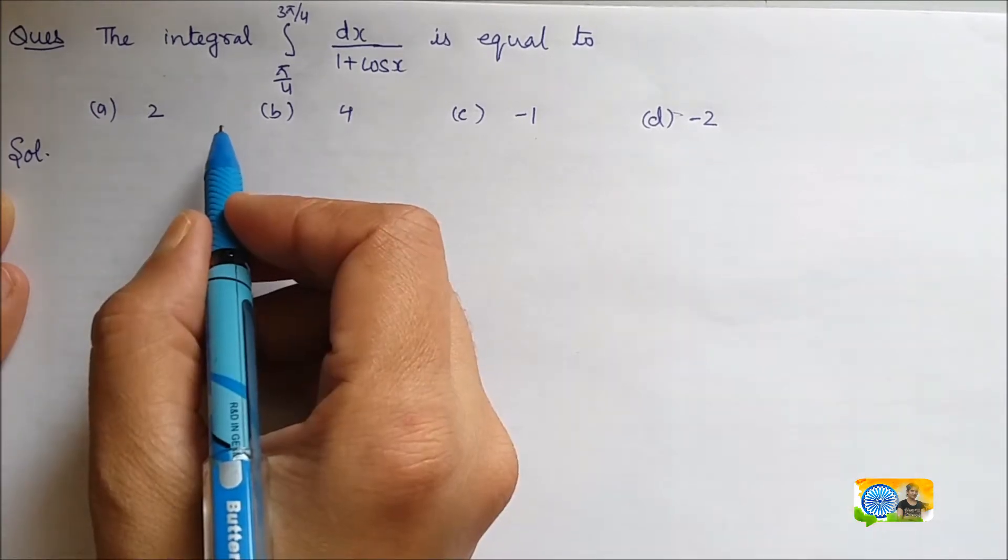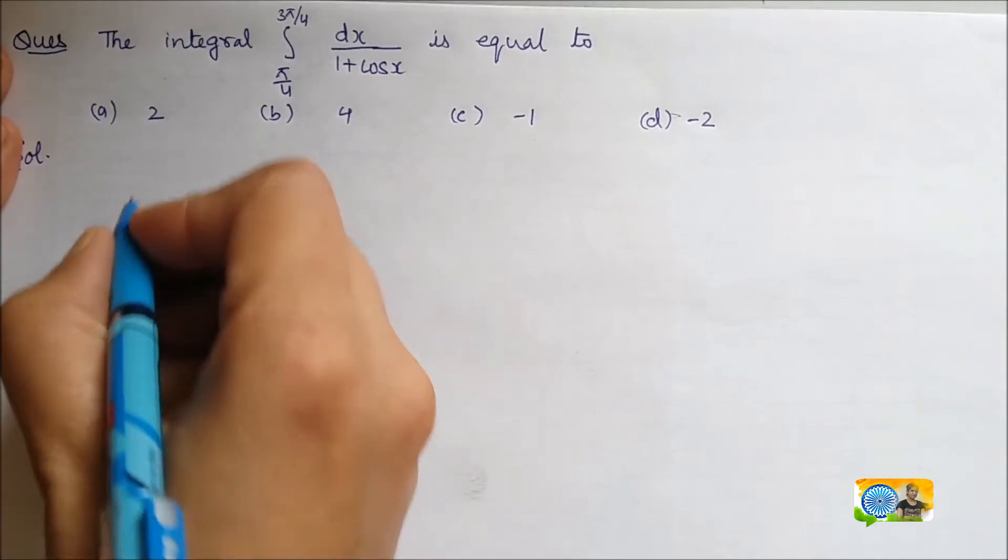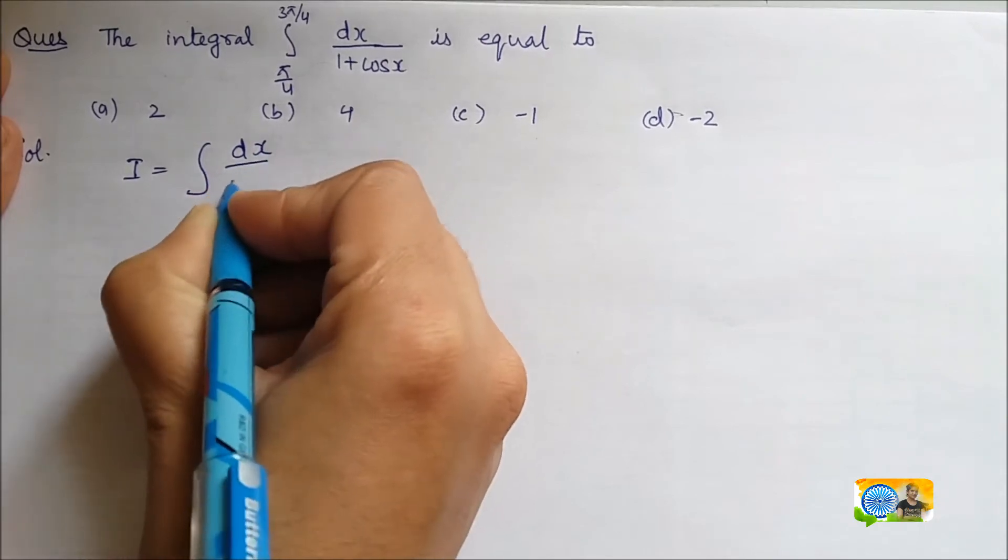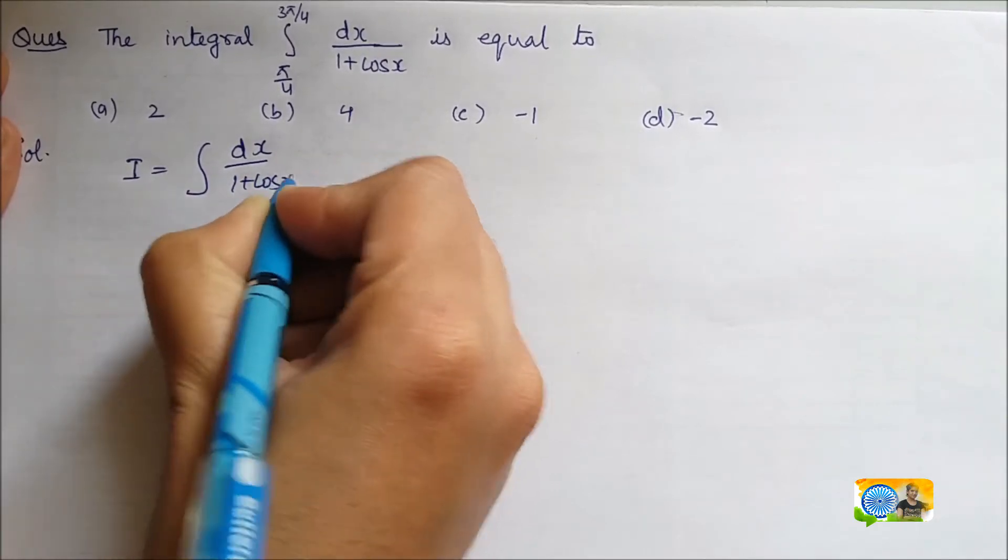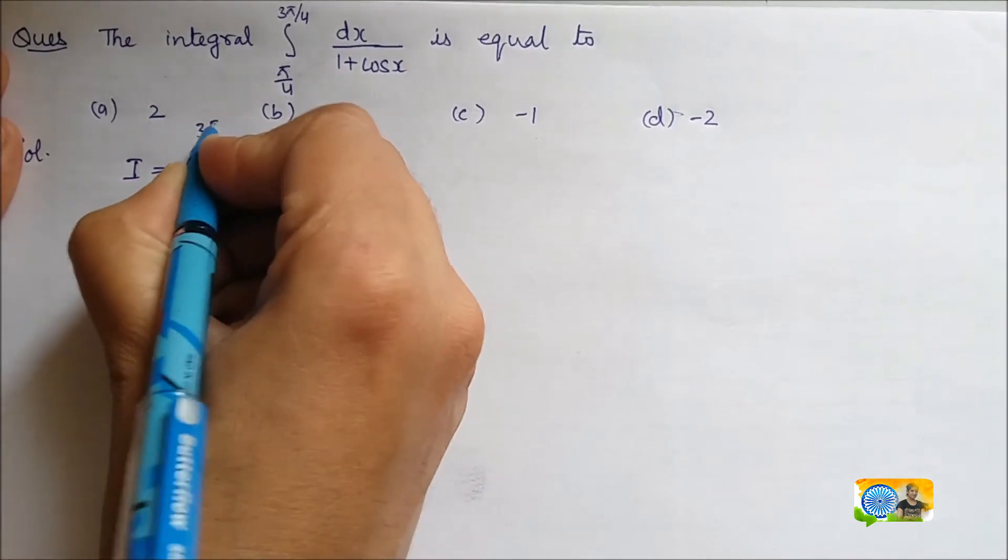Let us solve this problem to know which option is the correct one. So, let us start with the integral. I is equals to dx 1 plus cos x. Limits are pi by 4 to 3 pi by 4.